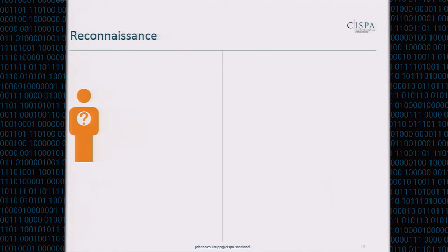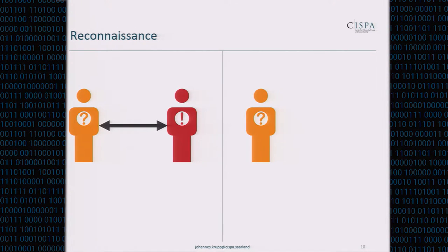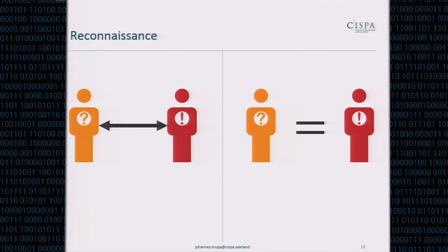Why is finding the scanner helpful? We can think of two scenarios. In the first, the scanner scans the internet, finds a list of amplifiers, and shares it with the attacker — so identifying the scanner means identifying an accomplice. On the other hand, scanning is not really hard: tools like ZMap and Masscan let you scan the entire IPv4 range in less than an hour. So it could also be that the scanner and the attacker are the very same person, in which case finding the scanner means finding the attacker.